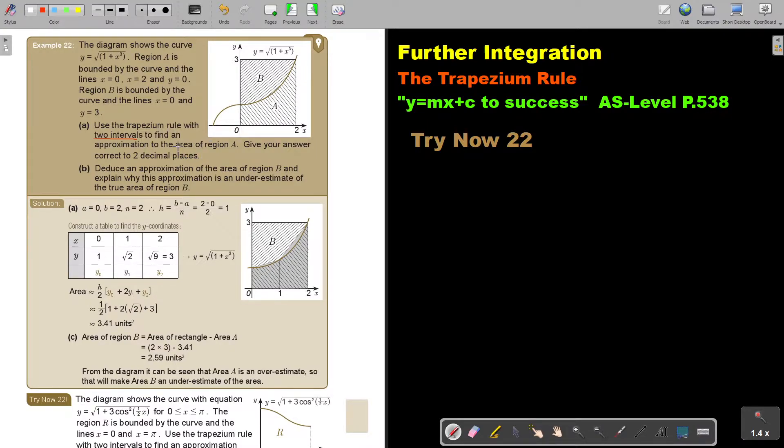So let's start. This is the value of A, this is the value of B, and then n is the amount of intervals, 2. And then I work out h and I get 1.